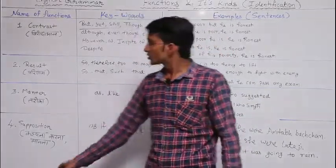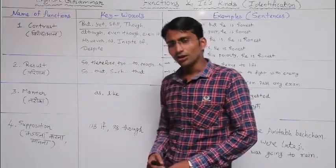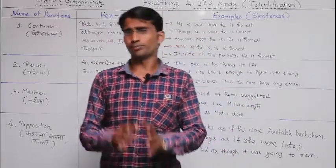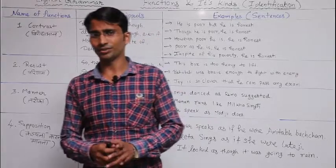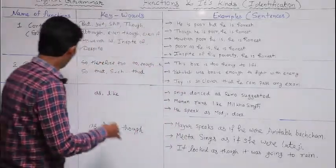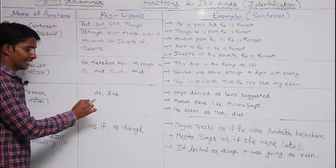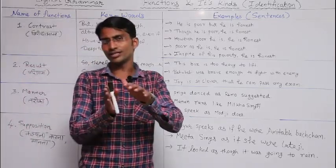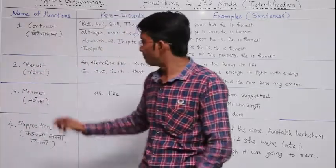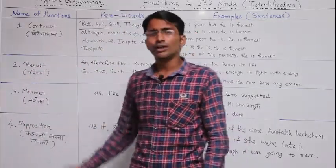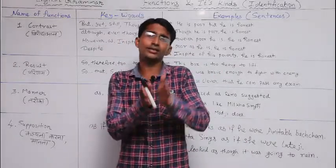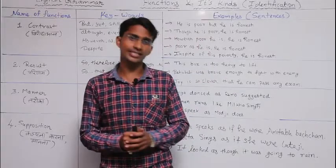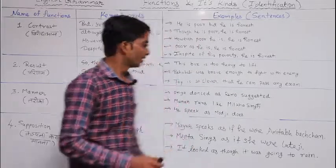Now the third function is 'manner,' which means 'tareeqa' — the way or method of doing something. The keywords for manner are 'as' and 'like.' These two words are the keywords of the manner function. Let us see some examples to understand both keywords clearly.